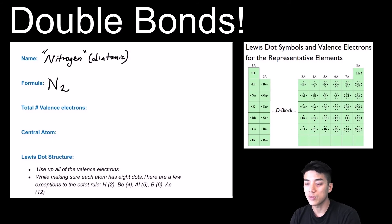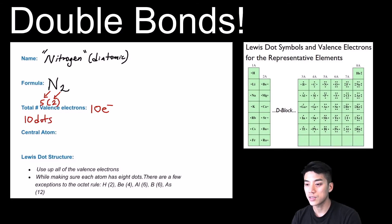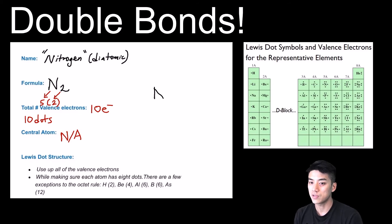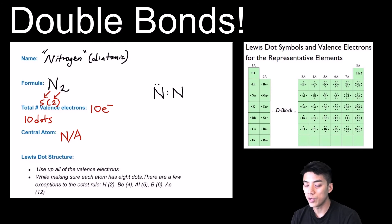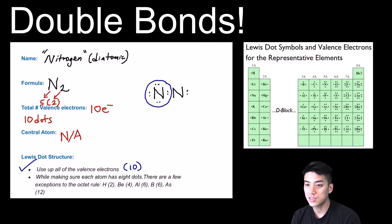Nitrogen is a diatomic, so in nature you encounter it as a bonded pair, N₂. With five valence electrons each, that's ten electrons to work with. There's no central atom — you can't have a center with just two things. First, try a single bond: placing electrons gives ten dots used, satisfying condition one. But one nitrogen has eight dots while its neighbor has only four — the octet rule is not satisfied. That structure is invalid. Trying a double bond still leaves one nitrogen with only six — that doesn't work either.